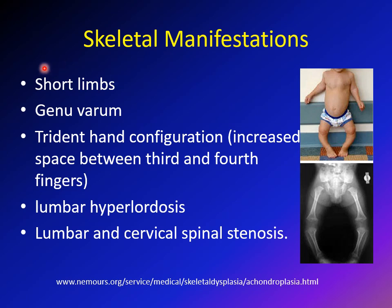Skeletal manifestations include short limbs, especially the arm and thigh. Children typically have genu varum — bow legs — where the lower legs point inward toward the midline, as seen in the x-ray. There is also trident hand with increased distance between the third and fourth finger. These children usually have lumbar hyperlordosis — exaggerated lumbar curvature — and lumbar and cervical spinal stenosis.